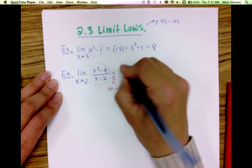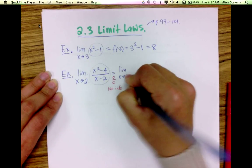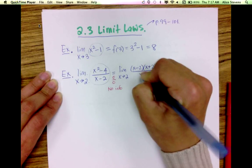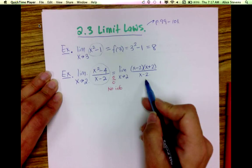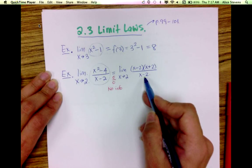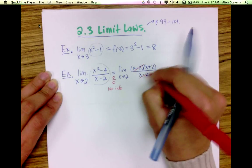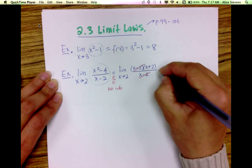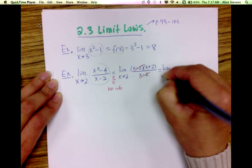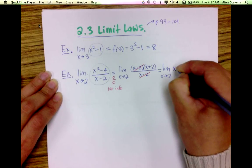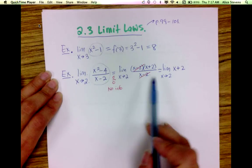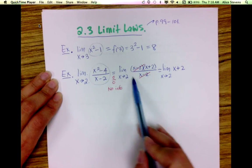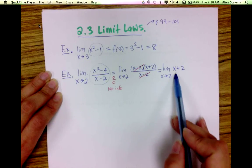What I notice is that if I factor the numerator, then as long as x is not equal to 2, I can cancel those two trouble-causing factors, and now I have this simplified expression. Notice that this function is not the same as the original, because the original function is not defined at 2, whereas this new function, which is a line, is.